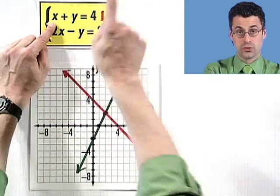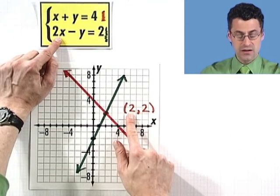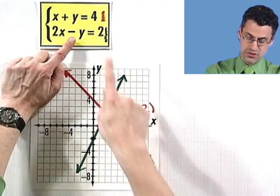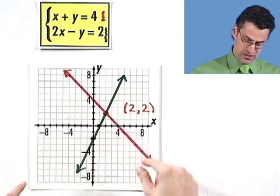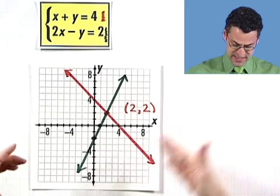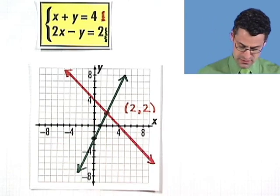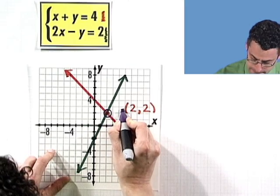2 plus 2 equals 4. That checks. We've got to check the second one too: 2 times 2 is 4, minus 2 is 2, equals 2. That checks. So we can see by checking that looking at the graph of each of these lines, the system actually points to a genuine solution at (2, 2).